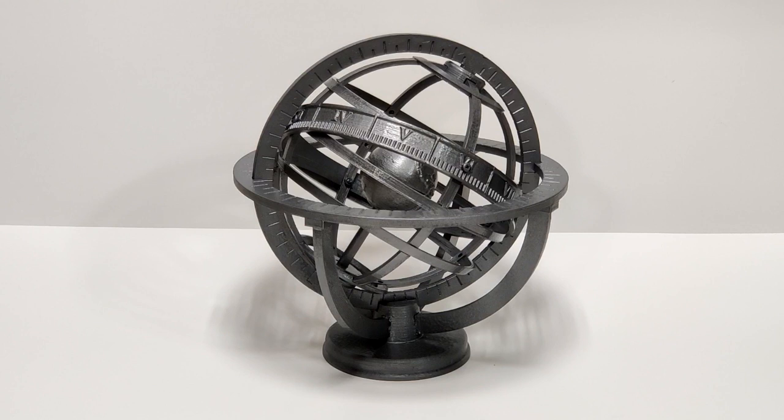This is called an armillary sphere and it's one of the oldest astrological and astronomical devices we know of. There are records suggesting these may have existed 2,200 years ago.